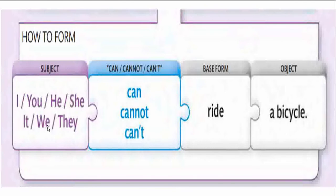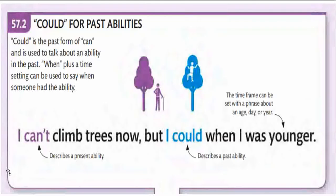The next pointer is 'could' for past abilities. 'Could' is the past form of 'can' and is used to talk about an ability that existed in the past. The word 'when' plus a time setting can be used to say when someone had that ability. Past ability is depicted with 'could,' and if you use 'when,' you can bring in a time marker as well.